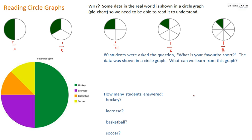So let's get into the question. 80 students were asked, what is your favorite sport? The data was shown in a circle graph. Here's the graph, labeled 'Favorite Sport.' It's color-coded — green represents hockey, purple represents lacrosse, orange is basketball, and yellow is soccer.